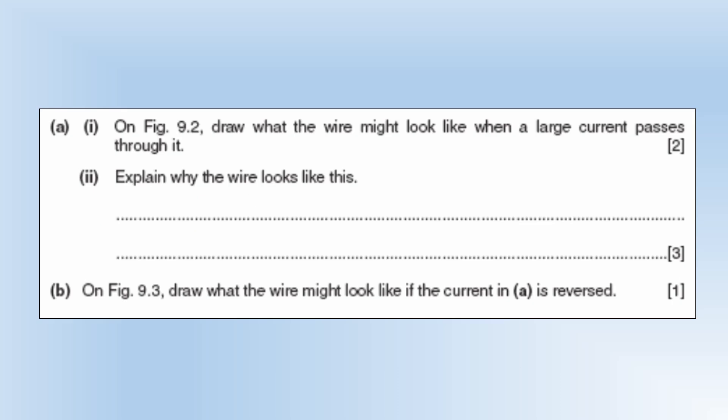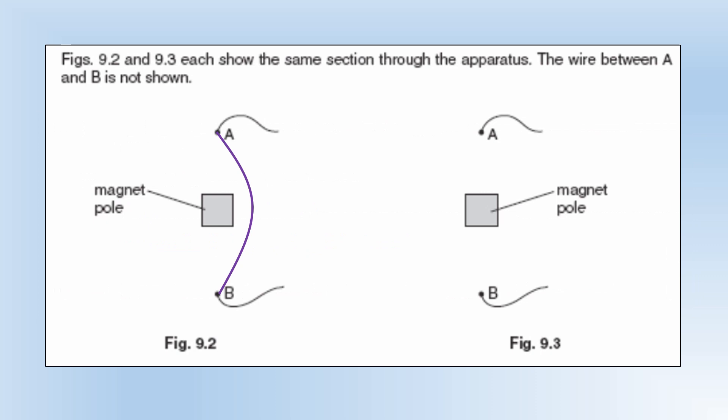Explain why the wire looks like this. Well the current carrying wire experiences a force from the magnetic field which causes it to bend. Because remember current carrying wire has a magnetic field. The permanent magnets have a magnetic field. They'll interact and they'll give you this magnetic force. Draw what the wire might look like if the current is reversed. Essentially what it's going to do is it's going to bend the opposite direction or deflect in the opposite direction.